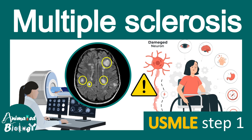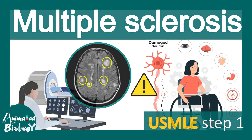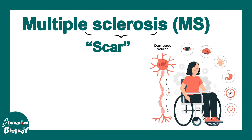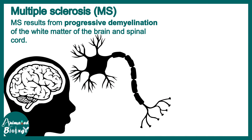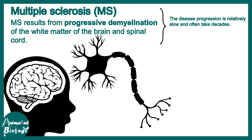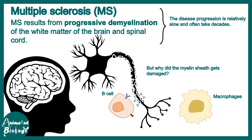In this video we'll be talking about multiple sclerosis — the high yield video for USMLE Step 1. Multiple sclerosis simply means multiple scars, and all this scarring happens throughout the spinal cord and the central nervous system, with many lesions accumulating over time. MS results from progressive demyelination of the myelin sheath in neurons of the CNS, caused by the immune system reacting against the myelin sheath through autoantibodies that recognize and destroy myelin proteins.